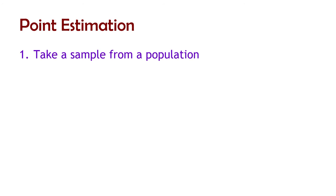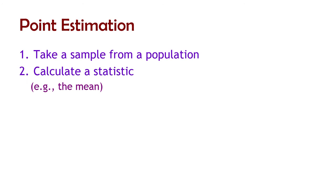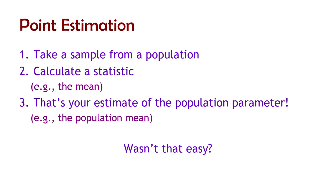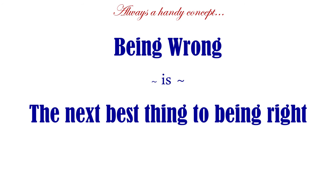So the process of point estimation is pretty simple. You just take a sample from a population and calculate a statistic in that sample - I've had more than one statistics professor who couldn't say the word 'statistics,' but he was an amazing statistician. You calculate a statistic from that sample, and that's your estimate. If your sample statistic is 3, then your best guess for the population is 3. If your sample mean is 12, then your best guess is that the population mean is 12. This reminds us of the concept that being wrong is the next best thing to being right.